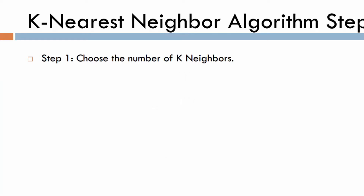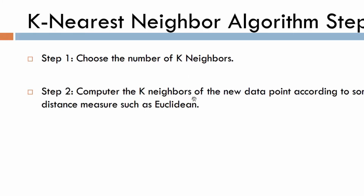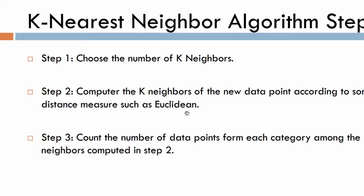This is a very simple algorithm. The first step is to choose the number of neighbors K. You need to identify whether K equals one, three, or some other number. One of the most commonly used values for K is five. Step two is to compute the K nearest neighbors of the new data point according to some distance measure, such as the Euclidean distance.